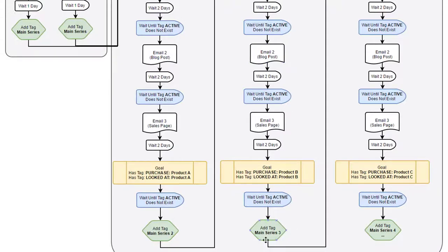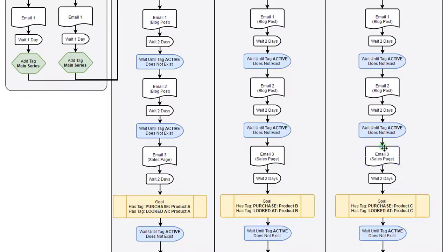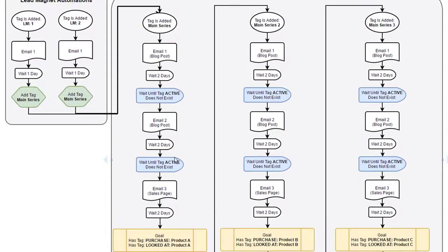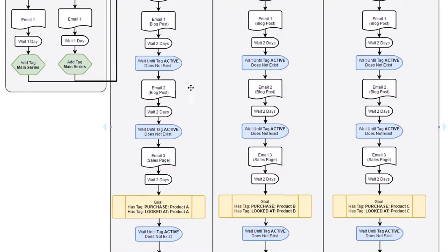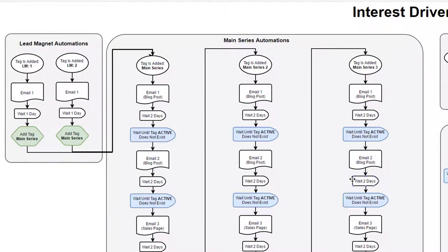In main series 2, email one is a blog post about topic B with a link to product B, email two is another blog post about topic B trying to sell product B, and email three is a direct email to product B's sales page. Again there's a goal action — if they've already purchased or looked at product B, they jump to the goal. Then we continue to main series 3 by adding tag 'main series 3,' which focuses entirely on topic C and product C with the same structure.